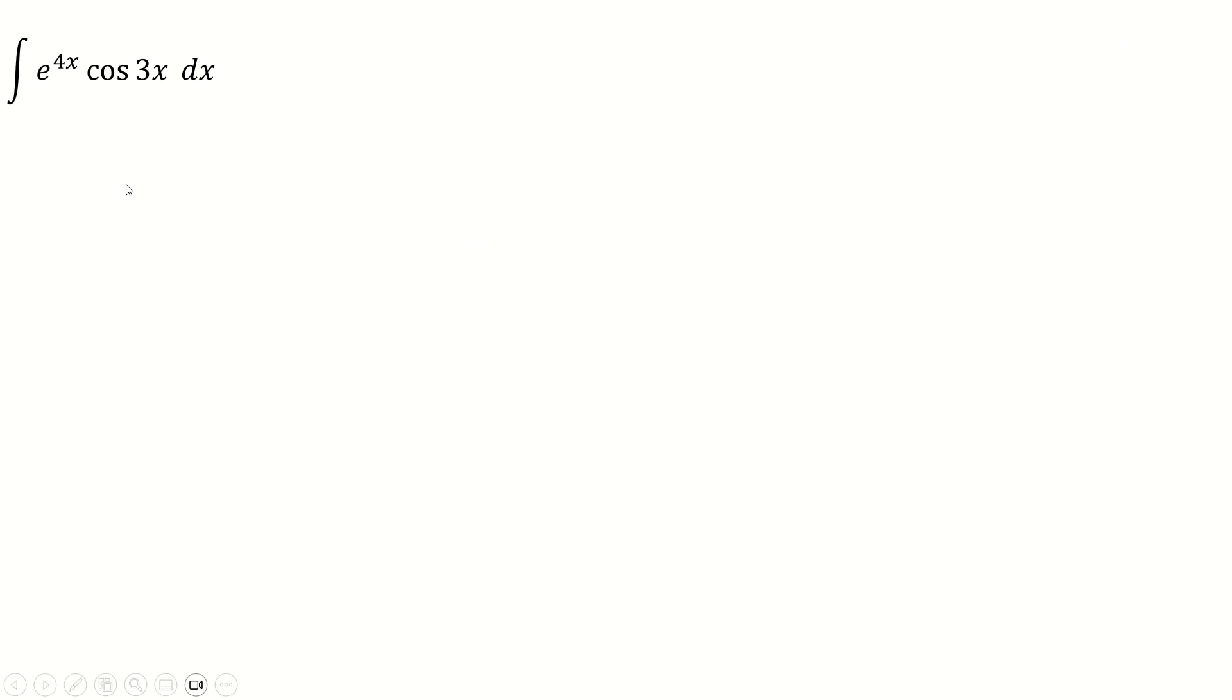e to the 4x times cos 3x. We will integrate this by imagination. Except this time, we're not actually going to be using the imaginary part of this. We're going to write this as e to the 4x cos 3x plus i sine 3x. But we'll actually be thinking about the real part, because the real part here is the only part that we've got. So we'll think about the real part this time.